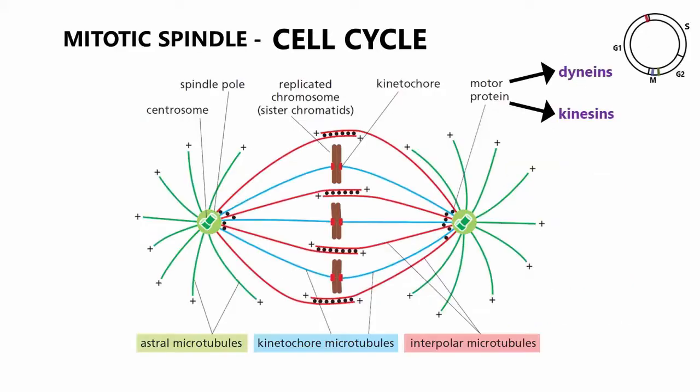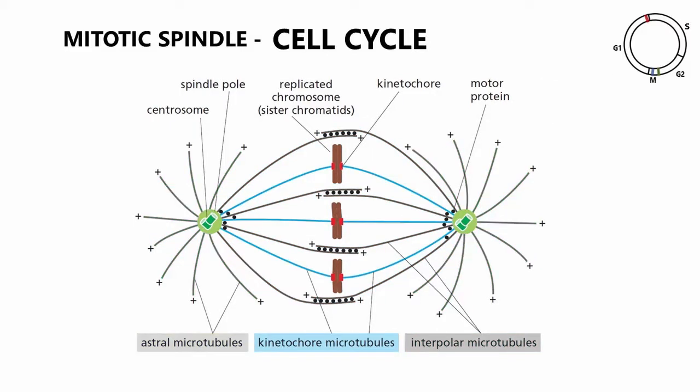The mitotic spindle is a bipolar array of microtubules, consisting of three major types of microtubules, namely astral, kinetochore, and interpolar microtubules, and its main function is the segregation of the two sets of chromosomes.